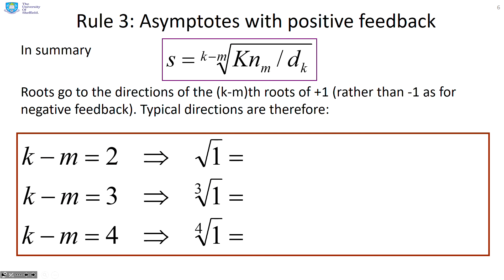Rule three, asymptotes or asymptote directions. There is a change here. If you look at this formula here, you'll see it's slightly different from what we had with negative feedback. And the key difference is noted here. You're doing the roots of plus one rather than minus one.